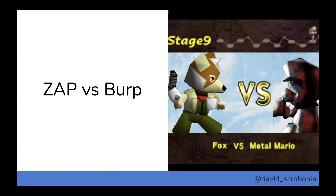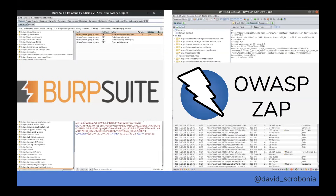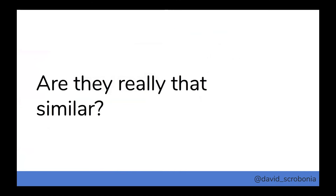First, I want to get into this ZAP versus Burp mentality. I think it's kind of silly. If you were to show someone who had never seen either one of these tools — show them Burp and then quickly pull up ZAP — I don't really think they would know the difference. Both are built on Java with similar sets of features. But by the same token, when we compare these things, each tool has its pros and cons on the thing it does really well.